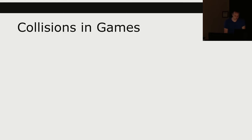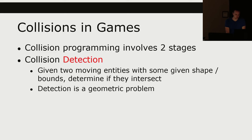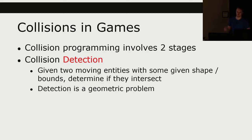Collisions programming involves two main stages. One is called collision detection: given two things that are moving with some given shape or bounds, determine if they intersect — are these two things currently intersecting? Detection is a geometric problem. You're typically working with shapes represented in some form and doing the math to detect if those things are overlapping in whatever space they happen to be in.